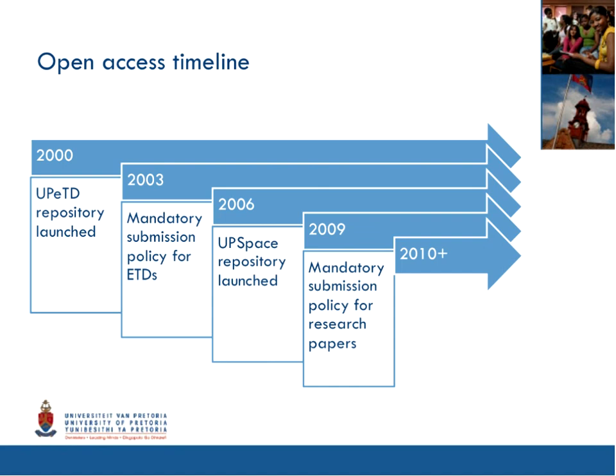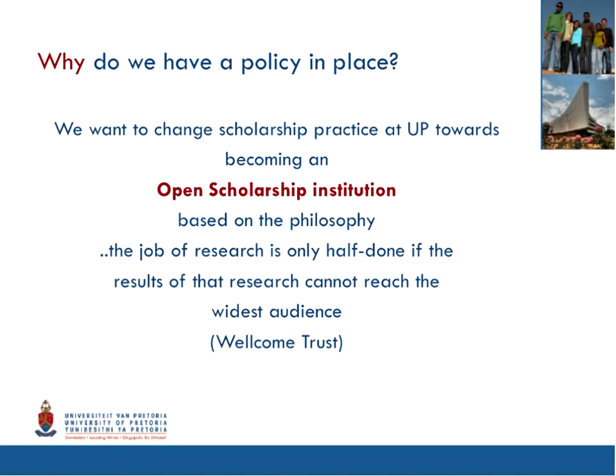Our open access timeline is as follows. In the year 2000, our first repository was launched, called UPETD — the University of Pretoria's Electronic Theses and Dissertations. In 2003, we followed this up with a mandatory policy for the submission of electronic theses and dissertations. In 2006, our second institutional repository was launched, called UPSpace, making use of DSpace software. And in 2009, our Senate accepted a mandatory submission policy for research papers to the UPSpace repository, and we have since been busy with the implementation of this policy.